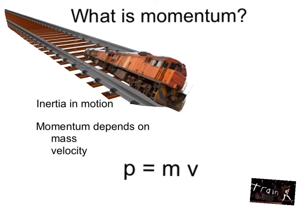We can calculate the momentum based on the mass and velocity of the train. Momentum, represented by the letter P, is mass times velocity. The units of momentum are kilograms meters per second, because we're multiplying mass (measured in kilograms) times velocity (measured in meters per second).